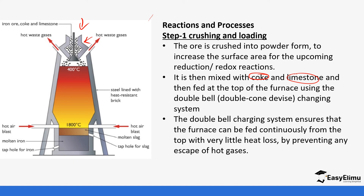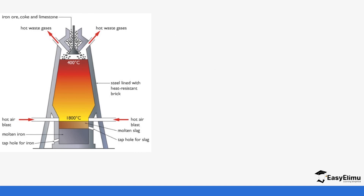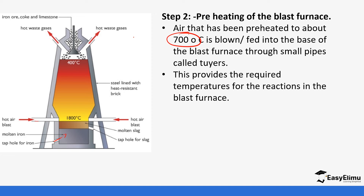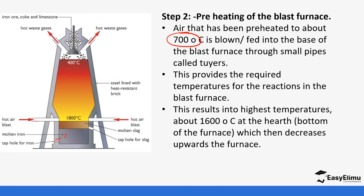The belt system helps prevent heat from being lost into the environment. For preheating, hot air that has been preheated to about 700 degrees Celsius is blown into the bottom of the blast furnace through small pipes. This provides the required temperature for the reaction to start, resulting in the highest temperatures at the base. Additional reactions occurring here increase the temperature gradually.